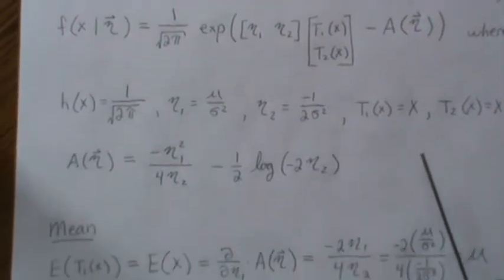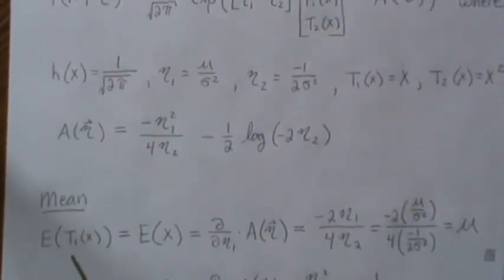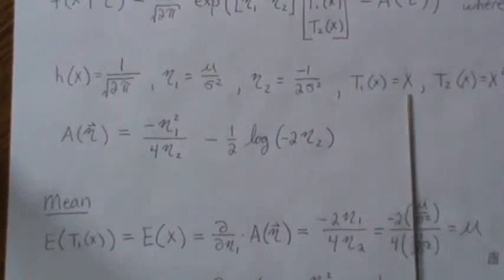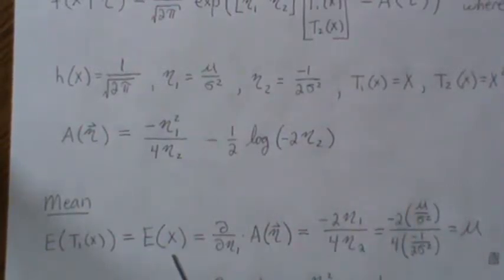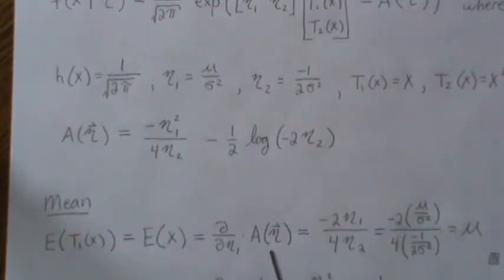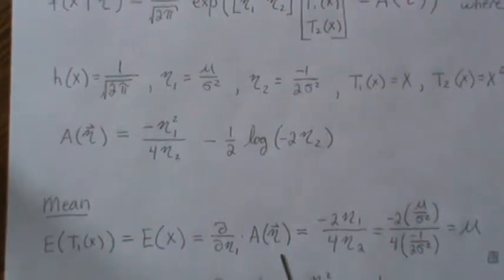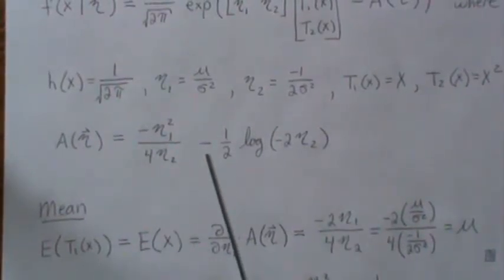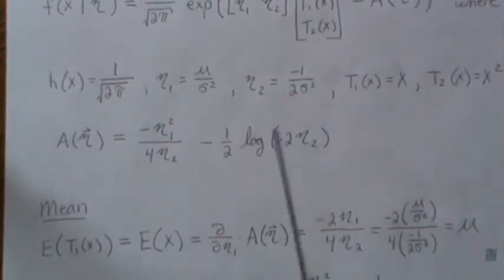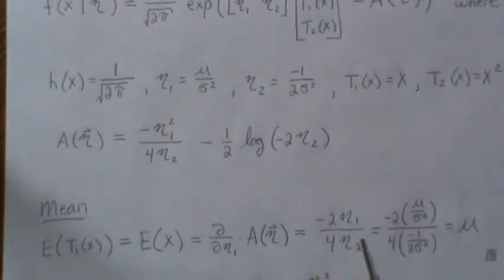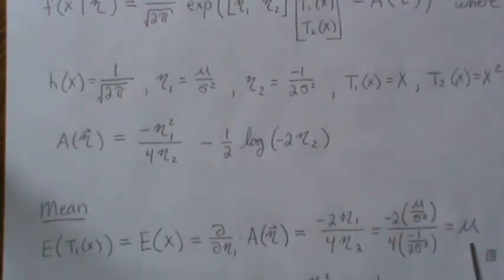So let's look at that. The expected value of the first sufficient statistic is the expected value of x — we know what that is for the mean. The theory of the exponential family says if we take the first partial with respect to eta 1 of our log partition, we get the mean of our first sufficient statistic. Here's our log partition; we take the partial with respect to eta 1, this piece goes away, and we're only left with this. Now let's plug in what eta 1 and eta 2 are, things cancel, and we get mu — as we should.